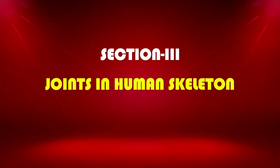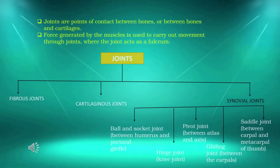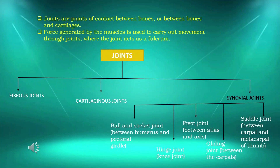Let us see the different joints in the human skeleton. Joints are points of contact between two or more than two bones, or cartilage. Force generated by the muscles is used to carry out movement through joints, where the joint acts as a fulcrum.